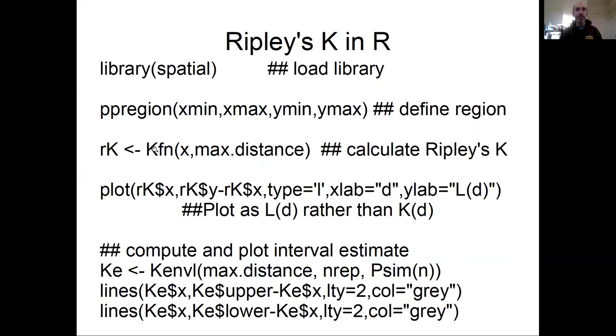To calculate Ripley's K, we just use the K function. We pass in the observed data, which is going to be a matrix with two columns for the coordinates. Those are coordinate pairs. And then we give the maximum distance that we want to calculate Ripley's K out to. And that returns an object that's a calculation of Ripley's K statistic. Two key things in that statistic are the X bin locations and the Y statistic.